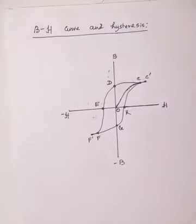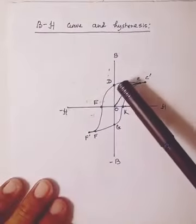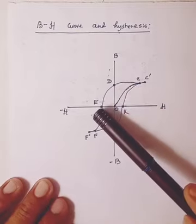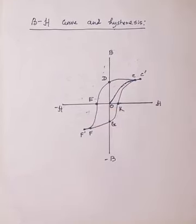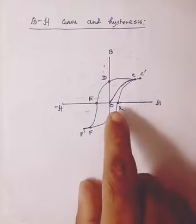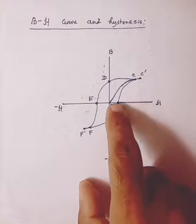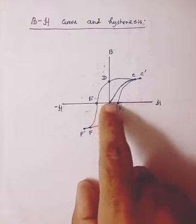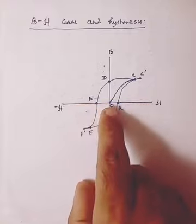Now next comes the part DE of the curve. Here what we are doing is now H is reversed. That means so far H was positive. Now we are making H negative because this is the negative axis of H.